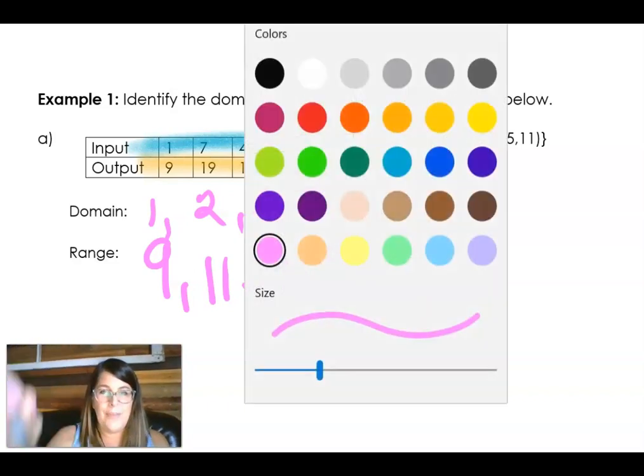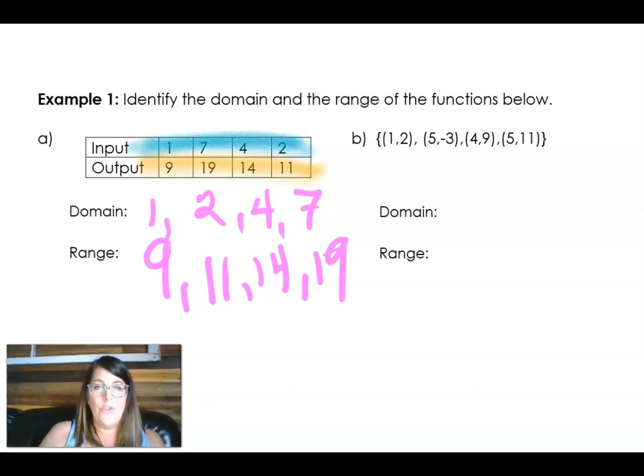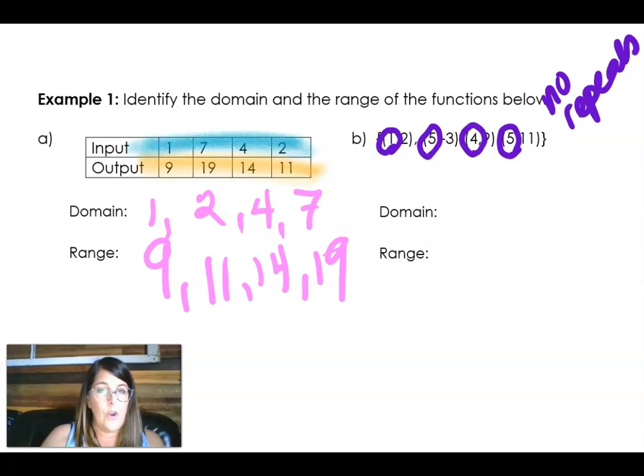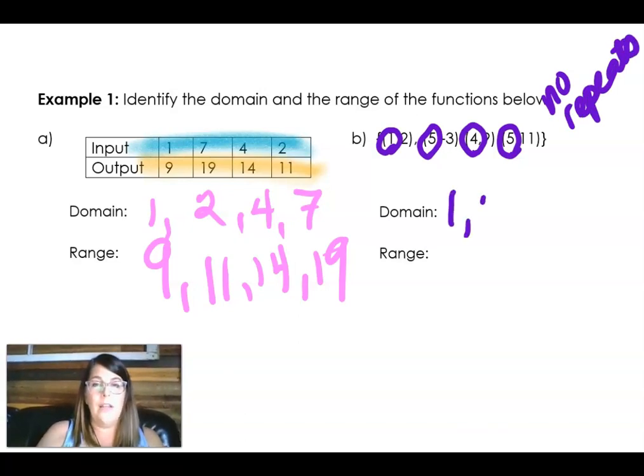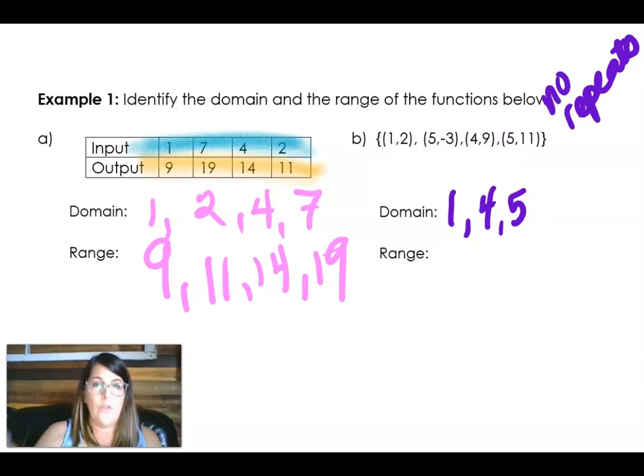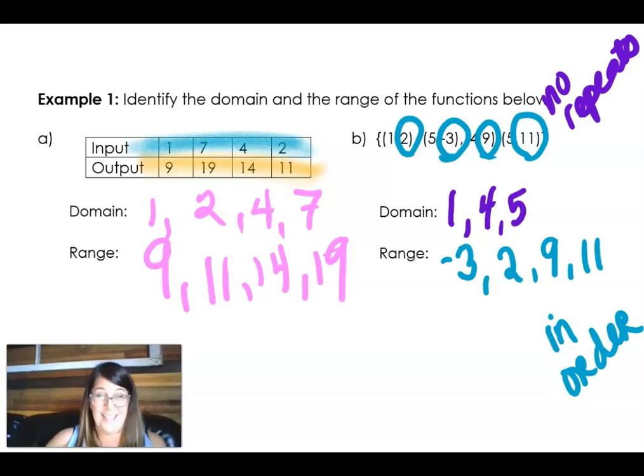So now, same situation, except this time I'm looking at my ordered pairs. Remember, my domain is all the x's. I got to list all of the x's: one, a five, a four, and a five. But remember that rule? No repeats. So a one, a four, and a five is my domain. Now, let's look at the range. The range is the y's. I've got a two, a negative three, a nine, and eleven. And so remember, you've got to put them in order. Don't forget about these little rules. So negative three is the smallest, then two, then nine, then eleven. Pretty straightforward, just listing the domain and the range.